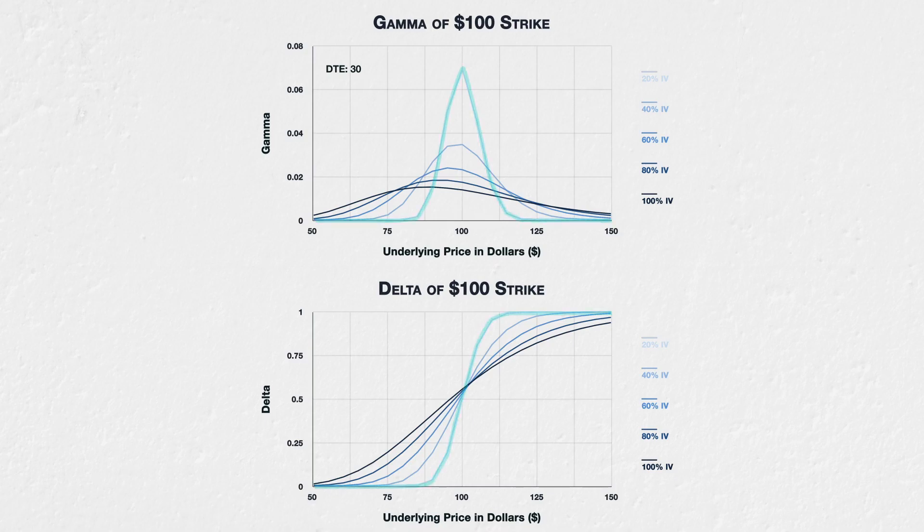For example, if we look at the 20% line on the delta chart, we can see that it is steepest — that is, the delta is changing at the fastest rate — when the underlying price is at about $100. This corresponds with the peak on the gamma chart for 20% IV being at about $100. We can also see that the delta quickly reaches the extremes of 0 and 1 within a narrow price range, hence why the gamma chart for 20% IV is also very narrow.